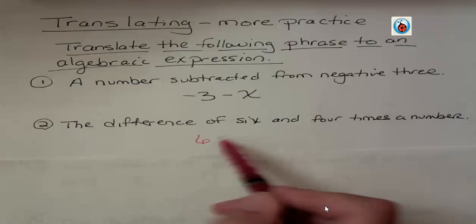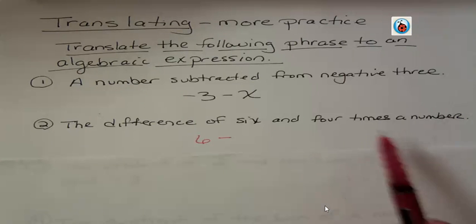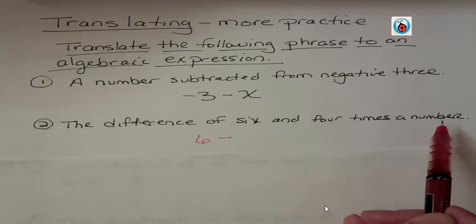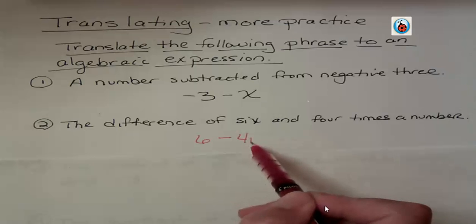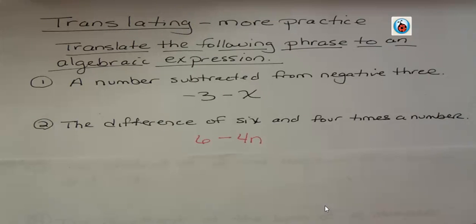And then we're subtracting four times a number. What does four times a number look like? Well, it could look like four n. That's the difference of six and four times a number.